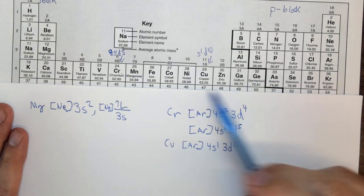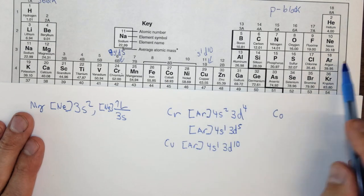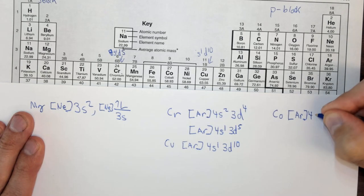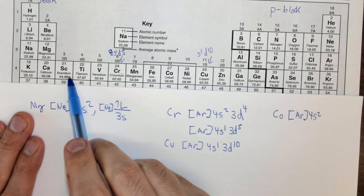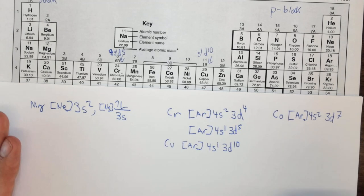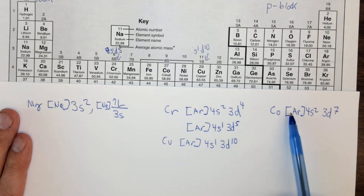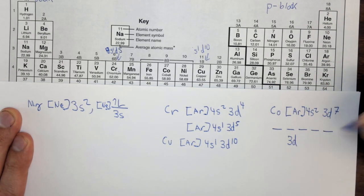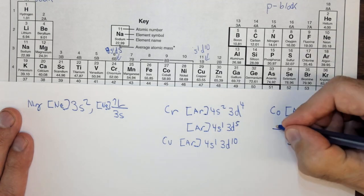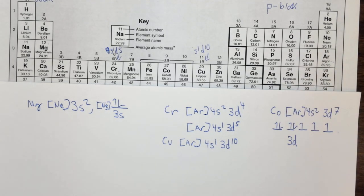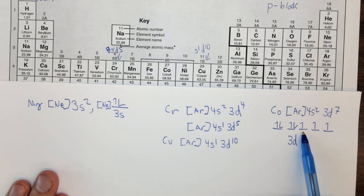Let's pick a non-exception: cobalt. Cobalt is [Ar] 4s² 3d⁷ (argon accounts for 18 electrons). To determine whether it's paramagnetic or diamagnetic, draw the five 3d orbitals and place 7 electrons: up, up, up, up, up, then down, down. There are unpaired electrons, so cobalt is paramagnetic.